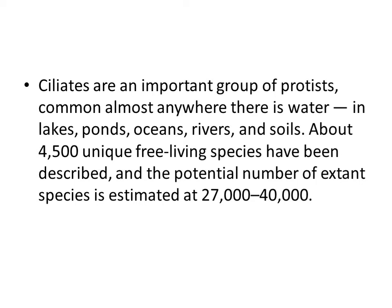Ciliates are an important group of protists, common almost anywhere there is water — in lakes, ponds, oceans, rivers, and soils. About 4,500 unique free-living species have been described, and the potential number of extant species is estimated at between 27,000 and 40,000.